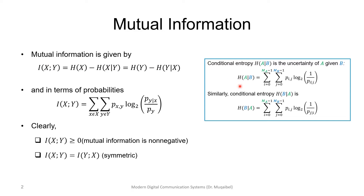We can define the conditional entropy between A and B as very similar to the entropy, but we have two summations. We have one over the conditional probability, but here we have the joint probability. What we have in the box is the definition of the conditional probability A given B or B given A. In terms of probability, the mutual information is the double summation of log base 2 of the conditional probability divided by P(Y), times the joint probability.